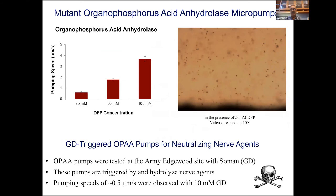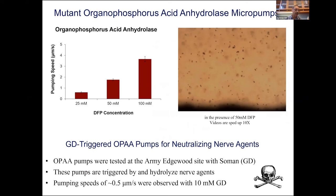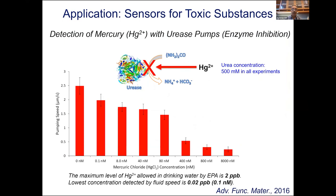We told the army how to make these pumps, and they showed that even the nastiest nerve agents like Soman can be neutralized because the pumps actively draw in the fluid and neutralize it. You can also use inhibition of the pumping by toxins to measure toxin amount—for example, detecting mercury ions using urease at as low as 0.02 parts per billion, well below the EPA limit.